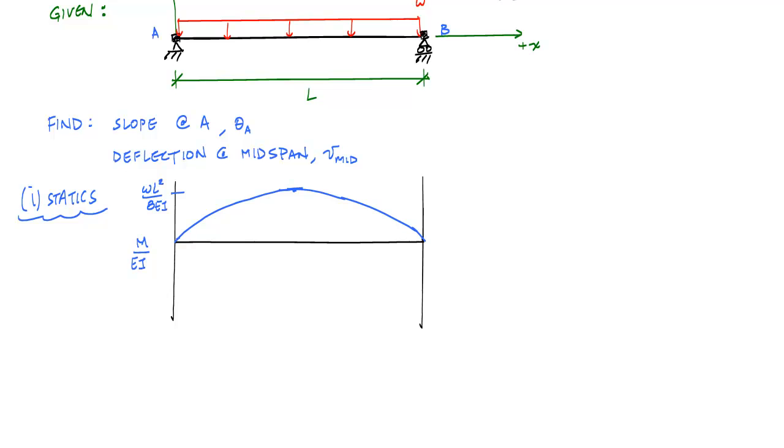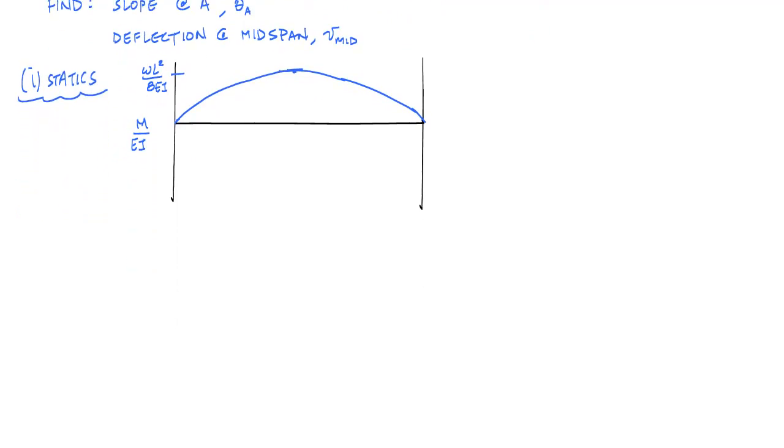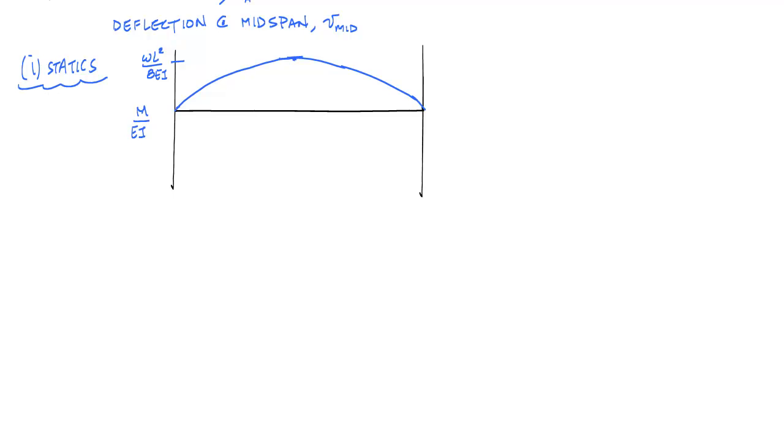The first thing I'm going to tackle is the slope at A. And so when I do that, I want to draw a qualitative deflected shape using the moment diagram. And because I know I have this positive moment, my beam is basically a happy face, if you will. And so if I draw my deflected shape, here is my undeflected shape, or my original structure. And with the loading applied to it, this is what my deflected shape will look like.